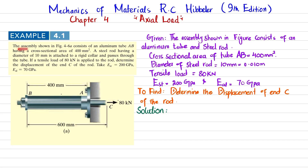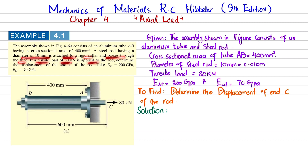The problem statement: the assembly shown in figure 4-6A consists of an aluminum tube AB having a cross-sectional area of 400 square millimeters. A steel rod having a diameter of 10 millimeters is attached to a rigid collar and passes through the tube. If a tensile load of 80 kilonewtons is applied to the rod, determine the displacement of end C. The modulus of elasticity of steel is 200 gigapascals and for aluminum it is 70 gigapascals.